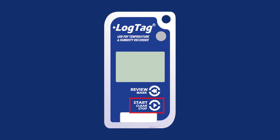It is also used to exit the statistical review. The Review Mark button can be used to enter the statistical review and to scroll through the statistical data directly on the display. It is also used to place an inspection mark in the data listing.